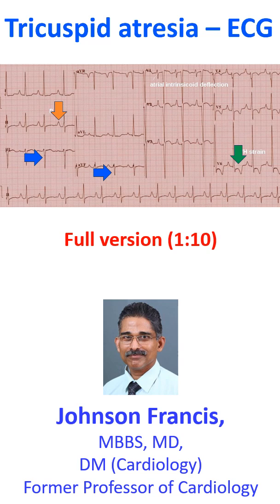The biphasic P wave in V1 with sharp atrial intrinsic cord deflection — the sharp downward deflection from the peak of the P wave to the trough of the P wave — is a pseudo left atrial overload pattern seen in right atrial overload.